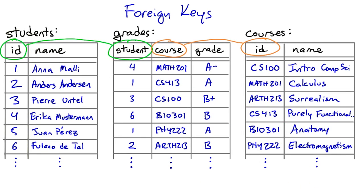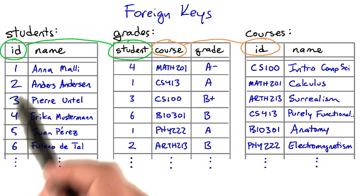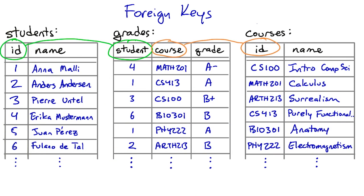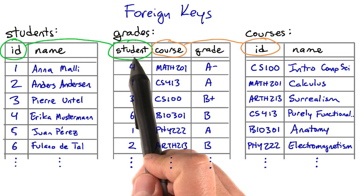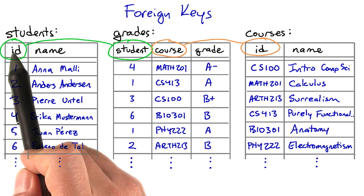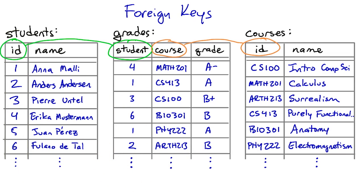Here are the same tables, but this time drawn out. Usually a foreign key will point to the primary key of the referenced table. That's because the whole point of a foreign key is to uniquely identify a row in the referenced table, and the table's primary key does that.